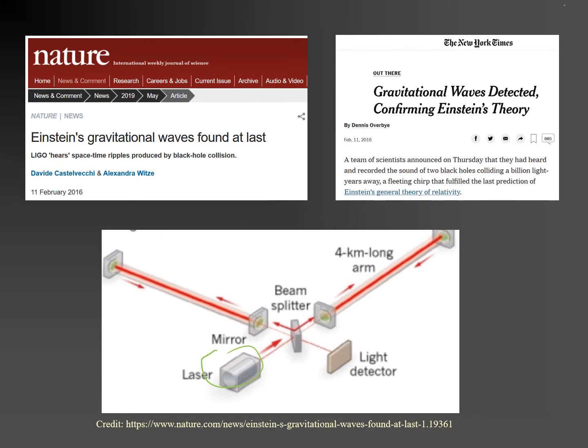A beam splitter splits the light from the laser, sending it along two mutually perpendicular paths. When a gravitational wave passes through the interferometer, the wave stretches the space along one path and squeezes the space along the other. The interferometer's role is to detect the extremely small difference in the paths taken by the light. It took teams of dedicated engineers and scientists decades to conceive, build and refine an instrument sensitive enough to detect the waves. It is still early days, but LIGO and similar observatories promise new insights into the working of the universe.